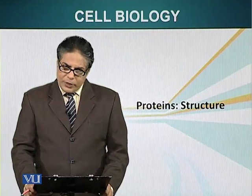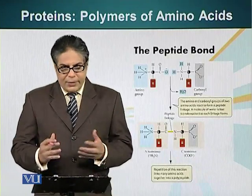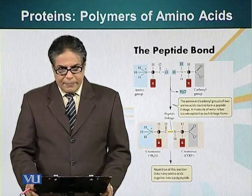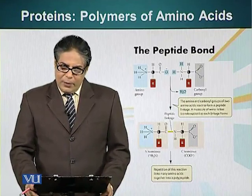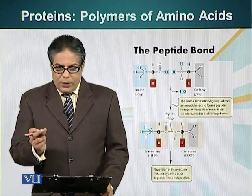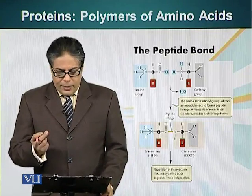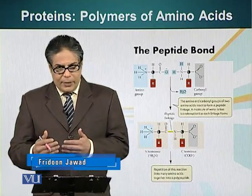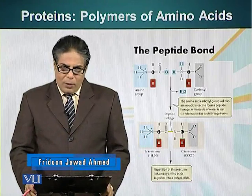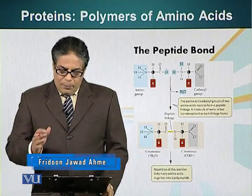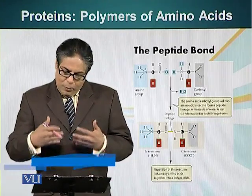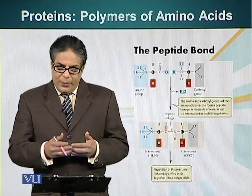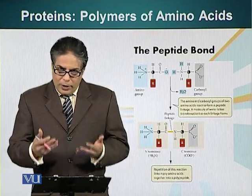The primary structure of protein is basically the sequence in which amino acids are linked together. We have already mentioned that amino acids are the basic unit of proteins — they are the monomers. These monomers are linked together with one another through a peptide bond, which forms when a water molecule is removed from two adjacent amino acids — a condensation reaction.